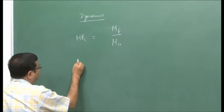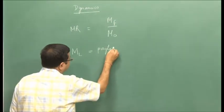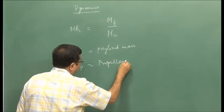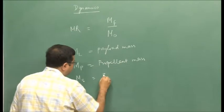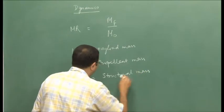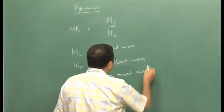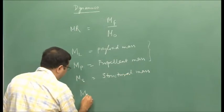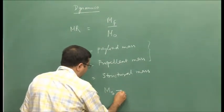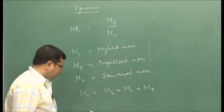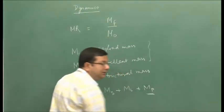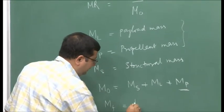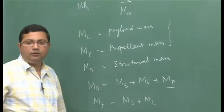We have defined various types of masses: M_L is the payload mass, M_P is the propellant mass, and M_S is the structural mass, which includes everything except the payload mass and propellant mass. The total mass at the beginning is the sum of all these. At burnout, all the propellant is supposed to have been used up. Therefore, what remains is only the structure and payload, so the final mass is M_S plus M_L.